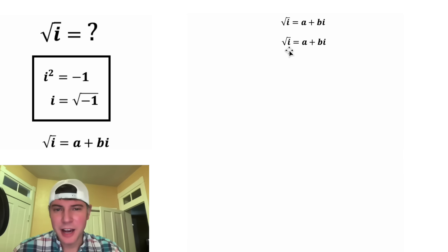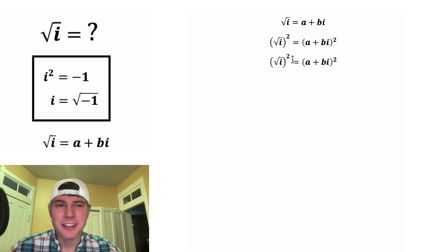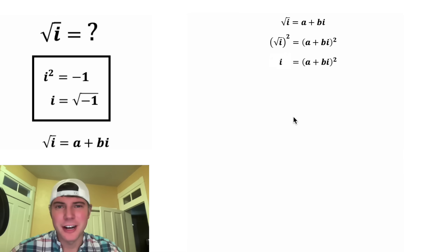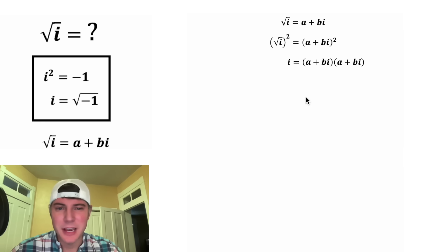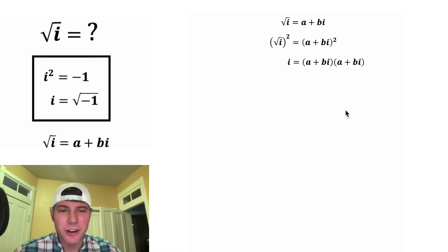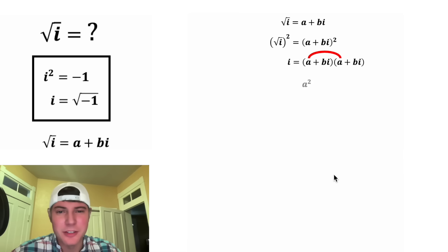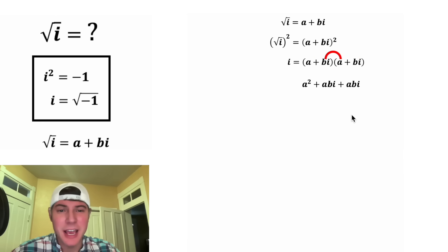Let's copy it down, and in order to get this i alone on the left-hand side, let's square both sides of the equation. On the left-hand side, the square and the square root will cancel each other out. On the right-hand side, a plus bi squared means the same thing as a plus bi times a plus bi. Now we can multiply this out — also known as foiling. We have a times a, which is a squared; a times bi, which is abi; bi times a, which is abi.